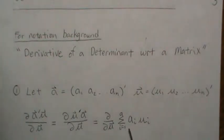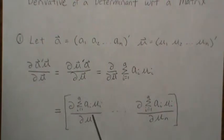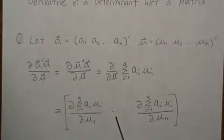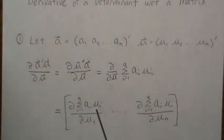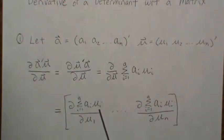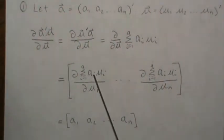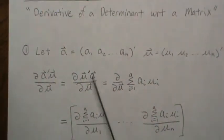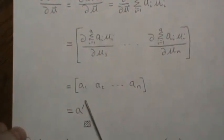We're taking this sum with respect to the vector μ. The first component is the derivative of this sum with respect to μ_1, the second component with respect to μ_2, and the nth component with respect to μ_n. Since only μ_1 appears in the first term, the others are constants and their partial is zero, so this becomes a_1, then a_2, and then a_n. Note that this is a row vector — we started with a column vector — so the answer is a', meaning a transpose.